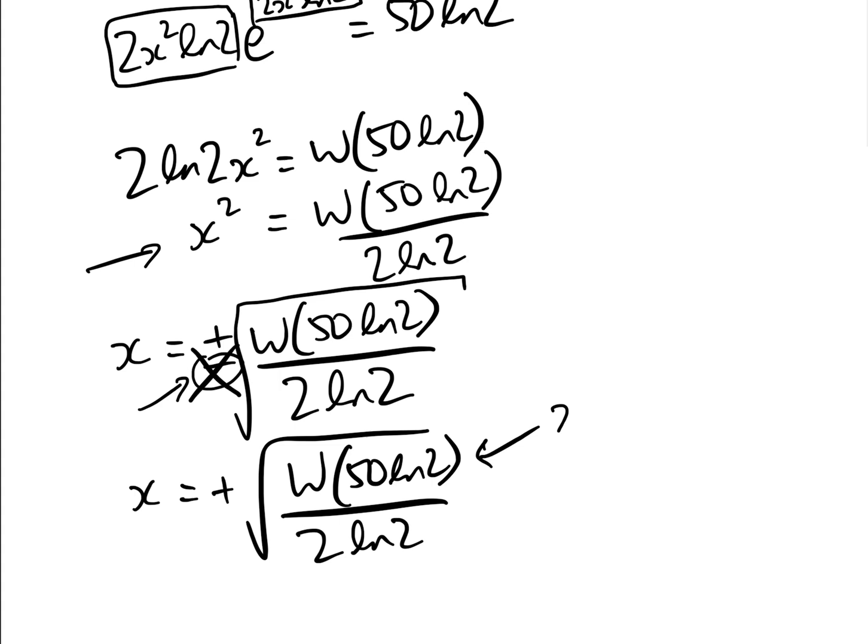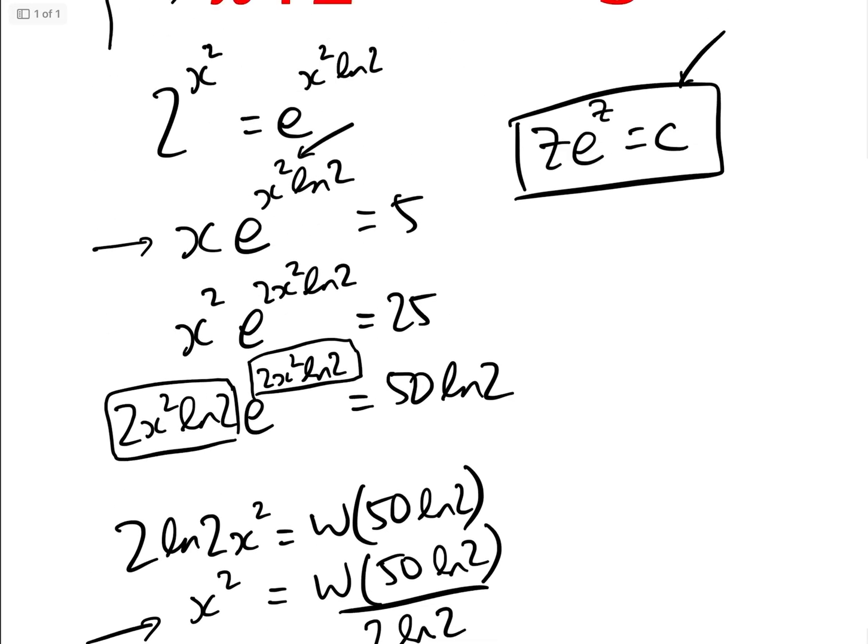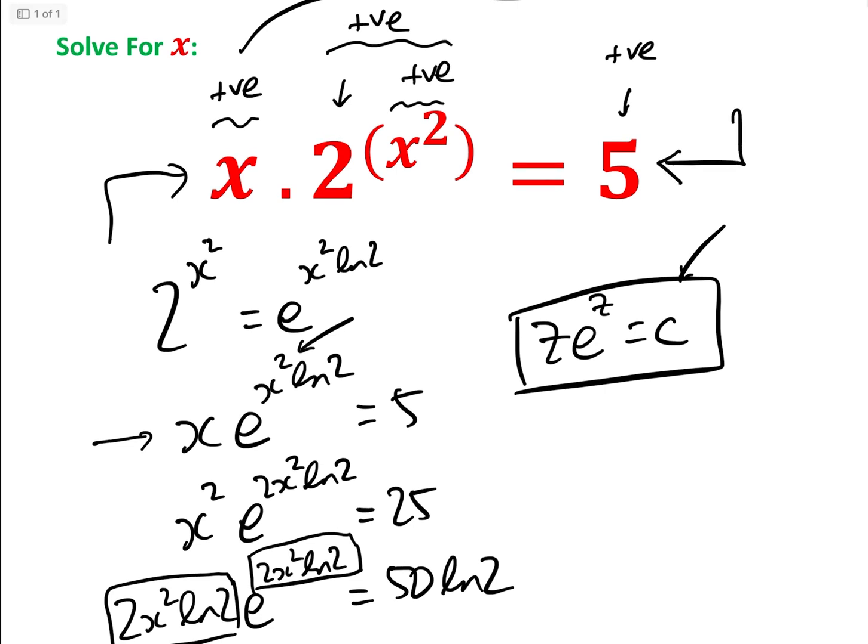W(50ln2), by any online calculator, equals approximately 2.59278, and therefore x is approximately 1.36758. That is the solution to this equation.